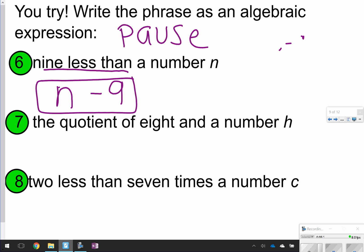The next one says the quotient of 8 and the number h. When you're given quotient questions, this is the order that it comes in. So the quotient of 8, 8, and the number h, divided by h. Or you could also write it like this, 8 over h. Either one of those work.